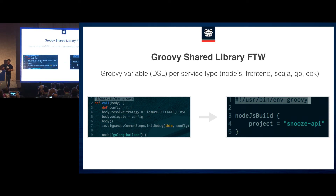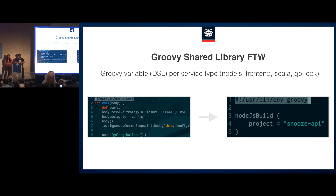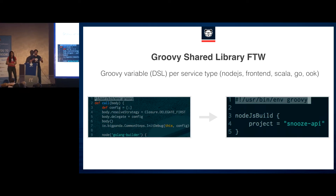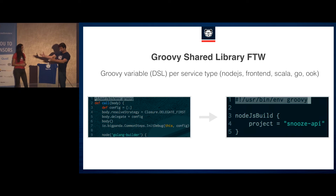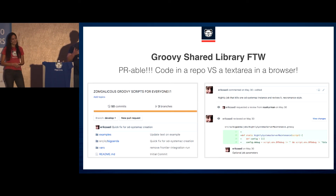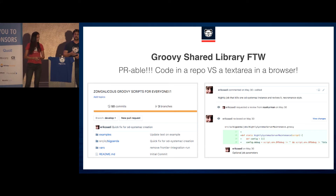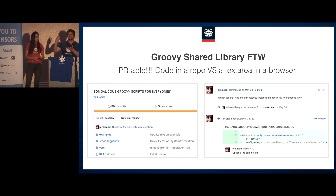Another cool thing: the Jenkinsfile itself is a DSL over Groovy. You can create a Groovy variable that takes the complex Groovy code on the left side and allows the developer to use a very simple, readable DSL on the right side. So if I'm a developer wanting to add a Node.js build, all I need to write is the Node.js build and its parameters. And the absolute best thing is that this is code — a repository, version controlled. I can work on it locally, iterate, push on a feature branch, and get a review from peers before putting it into Jenkins.